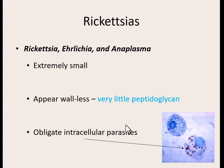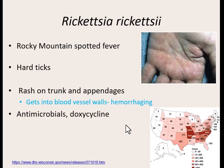They are all obligate intracellular parasites. They like to get inside our cells and feed off them, and it's because of their living inside our cells that they cause all of their damage. The first one is Rickettsia rickettsii, the actual bacteria name, and it causes the disease known as Rocky Mountain Spotted Fever.